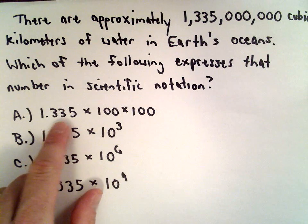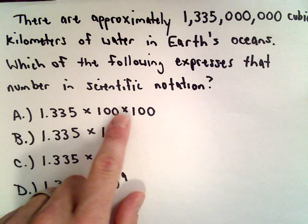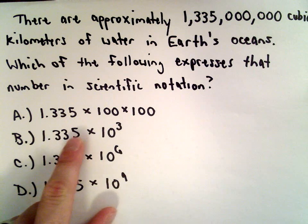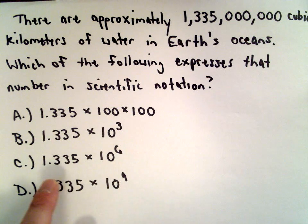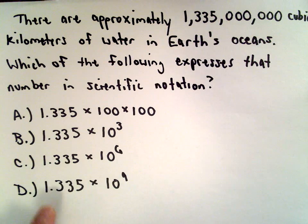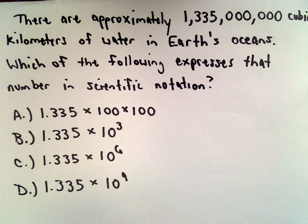Answer choice A is 1.335 multiplied by 100 multiplied by 100. Answer choice B is 1.335 multiplied by 10 to the third. Choice C is 1.335 multiplied by 10 to the sixth. Answer choice D is 1.335 multiplied by 10 to the ninth.